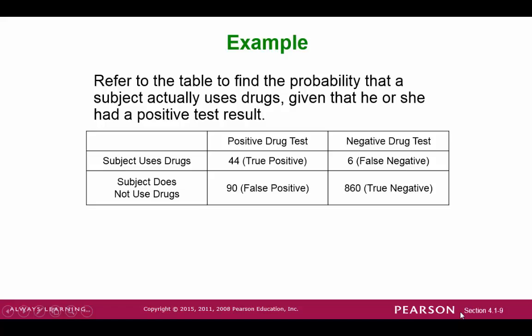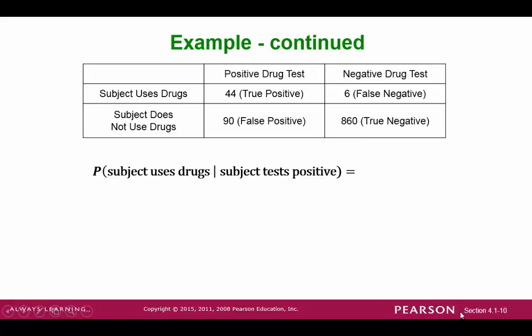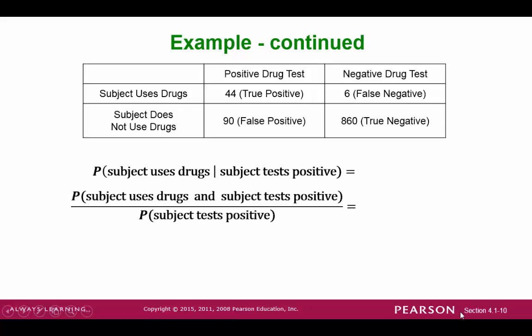Let's take a look at an example. This is a drug test scenario where employees were tested for drug use. We have 44 true positives, 6 false negatives, 90 false positives, and 860 true negatives. Just to rephrase this, we're looking for the probability that we select an actual drug user, given that this person tested positive. So this is a probability we're trying to find.